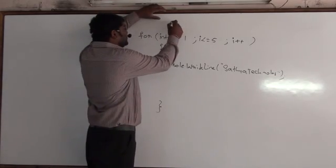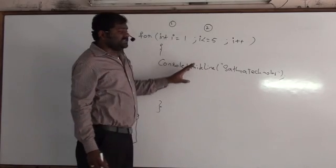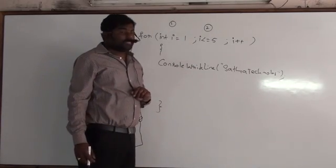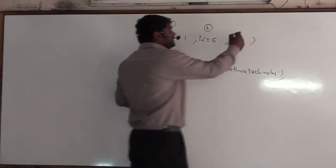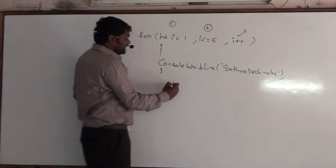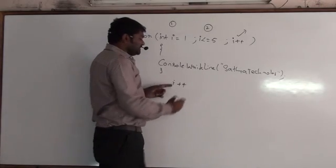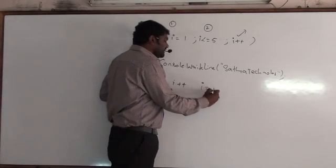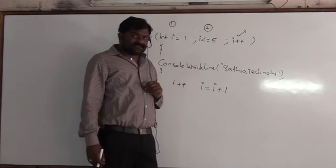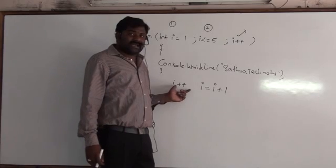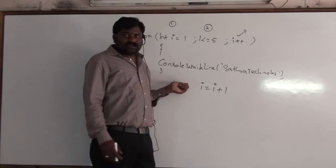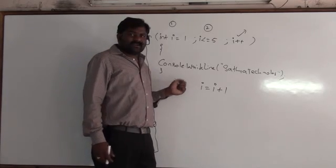How the for loop will execute: first step is initialization, second step is condition, third step is statements, fourth step is increment or decrement. What is the meaning of i++? i++ is nothing but i = i + 1. We are incrementing the initial value by one.